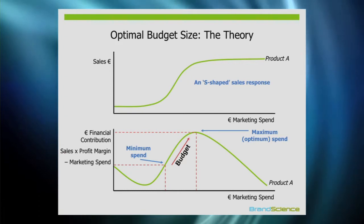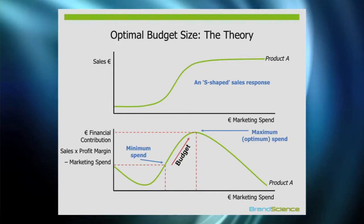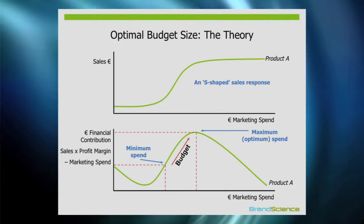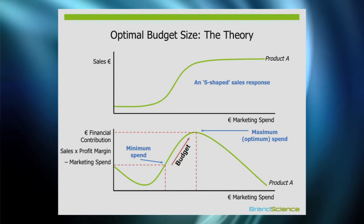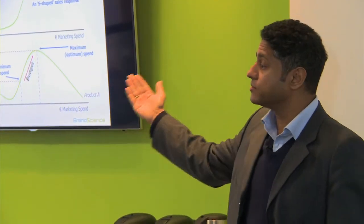Financial contribution initially goes down, then goes up, then goes down again. The peak of that curve is your optimal budget. If you can say to your finance director, 'I've done my analysis and this is what's going to happen to financial contribution,' that's how you set your marketing budget. There's also a minimum spend — if you spend less than a certain amount, you're better off spending nothing.